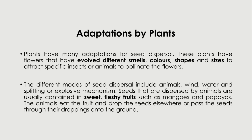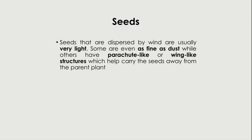Seeds dispersed by animals are usually contained in sweet fleshy fruits, or have hook-like structures that attach onto animals as they move. The animals eat the fruit and drop the seeds elsewhere, or pass the seeds through droppings. Seeds dispersed by wind are usually very light — some are as fine as dust — while others have parachute-like or wing-like structures to carry seeds away from the parent plant.